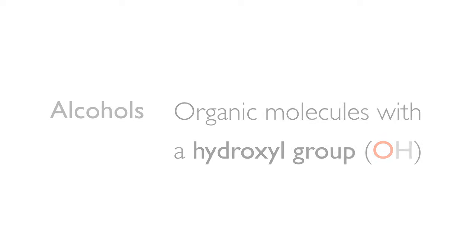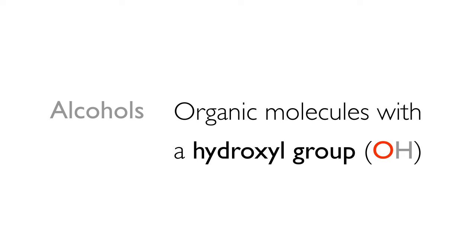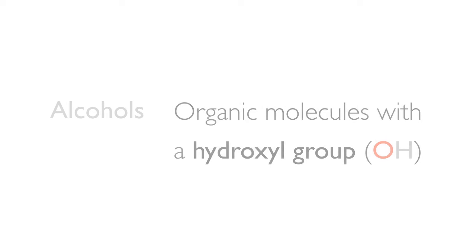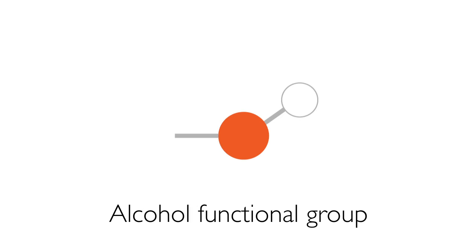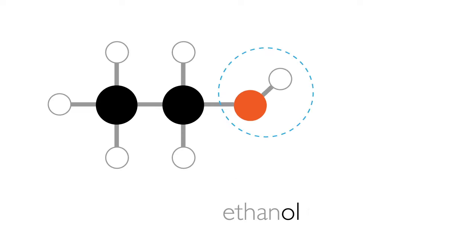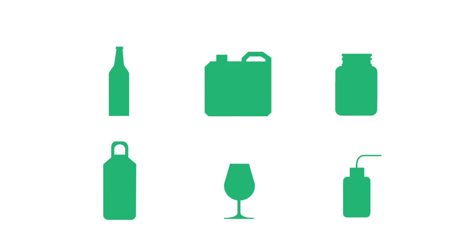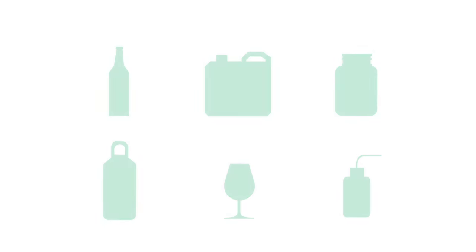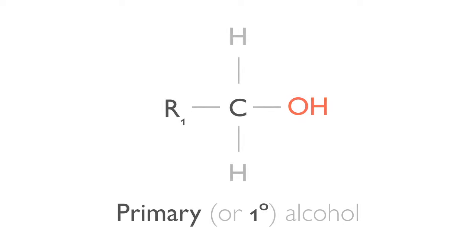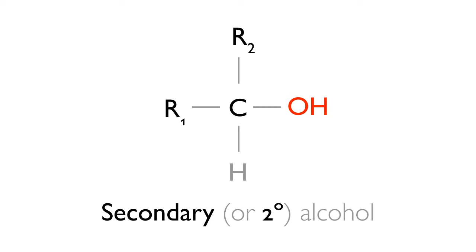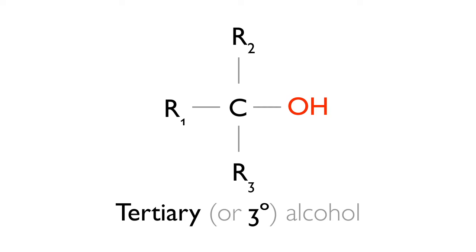Now, at the end of this tutorial, you should be able to identify the alcohol functional group, name alcohols, understand their uses and be able to categorise them as primary, secondary or tertiary.